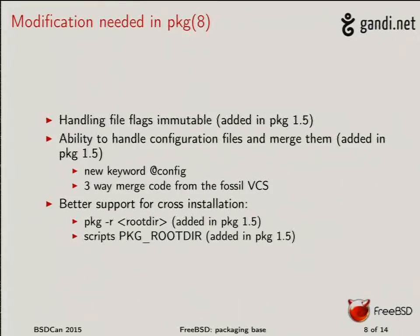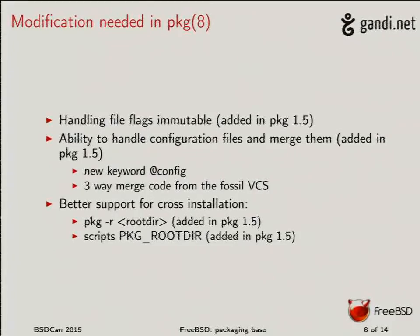We also needed support for cross-installation. Previously, cross-installation in pkg was done via chroot: 'package -c a_directory' would chroot inside that directory. While it works, it's not perfect — it doesn't allow a regular user to do cross-installation, and because it chrooted very early, your packages had to be inside the chroot and the install path had to be relative to it. So we added 'pkg -r' (rootdir), which just says 'this is my root directory, install everything there.' Please don't use this with ports yet since ports don't know how to handle it properly, but the base system can.